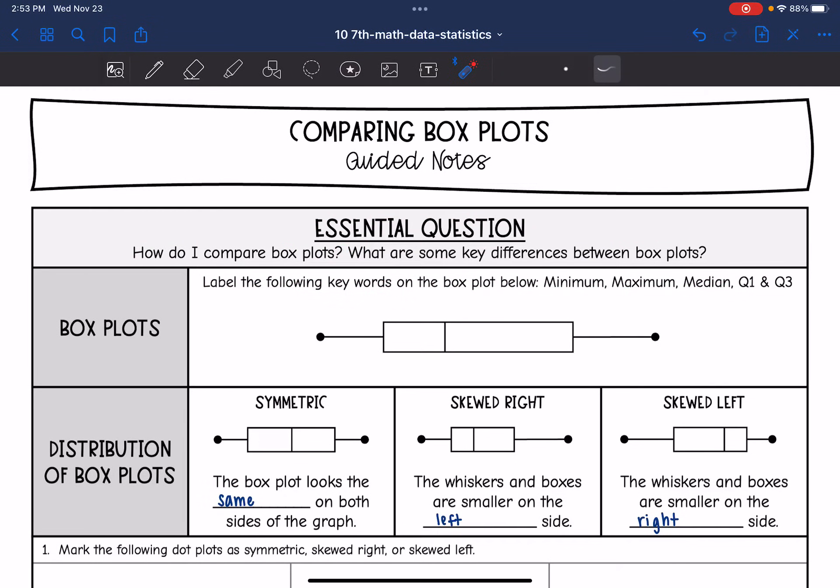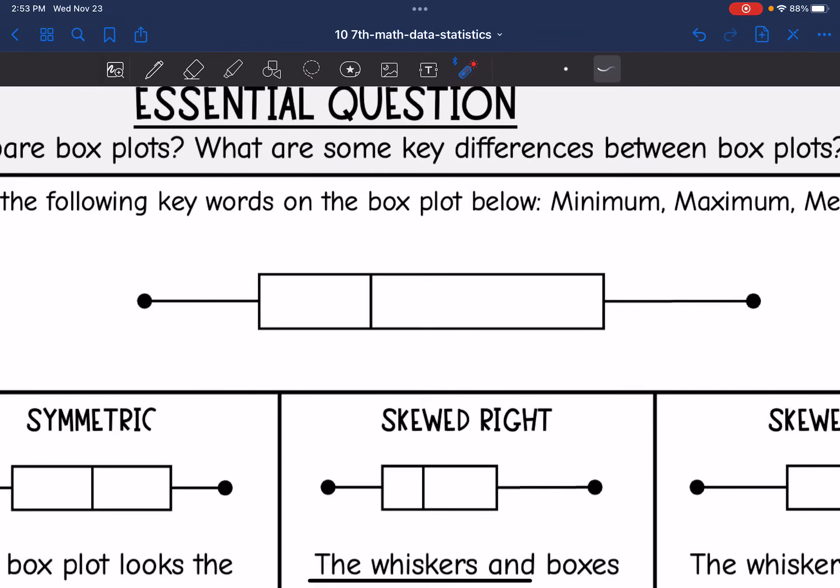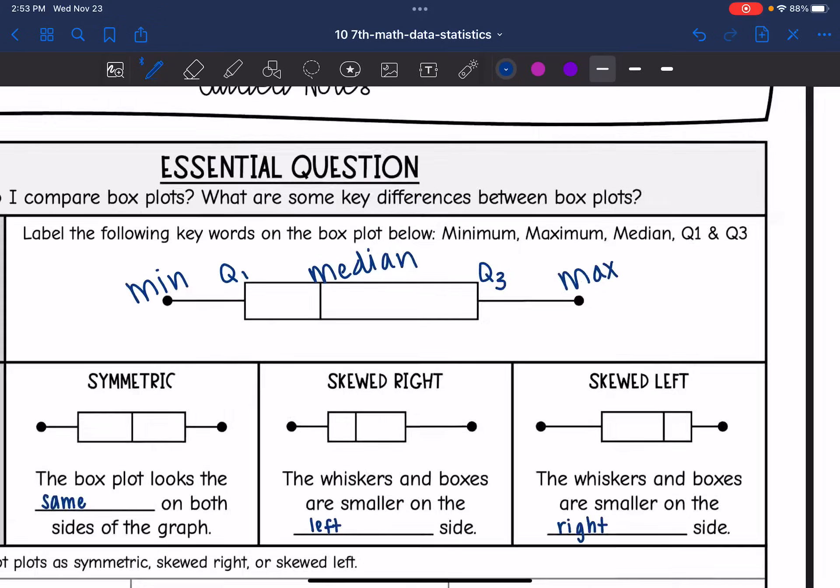So let's just start by reviewing the five key numbers of a box plot: minimum, maximum, median, Q1, and Q3. So remember the first dot is the minimum. The last dot is the maximum. This middle line is the median. And then Q1 is the median of the lower half and Q3 is the median of the upper half.